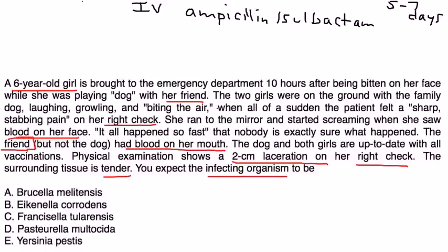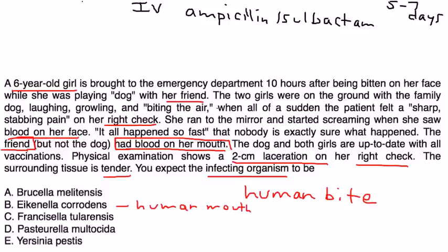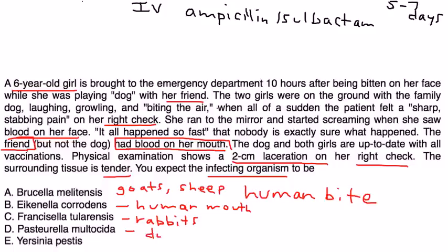Since the friend had blood on her mouth, this is a human bite, and in the human mouth the bug that lives is Eikenella corrodens. Some other organisms and what they're acquired from: Brucella is acquired from animals such as goats and sheep; Francisella tularensis comes from rabbits; Pasteurella multocida comes from animals such as dogs and cats; and Yersinia pestis, interestingly, comes from a rat flea.